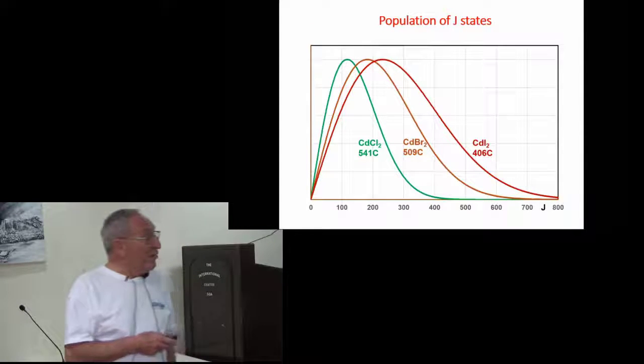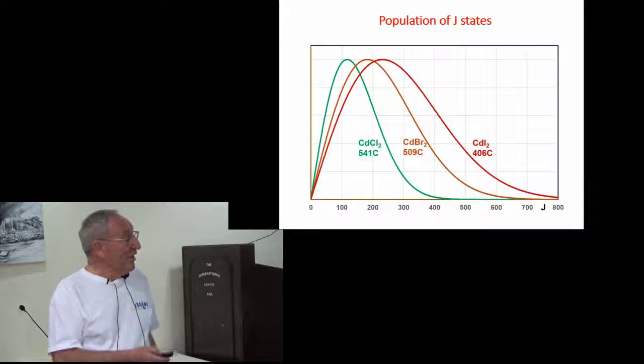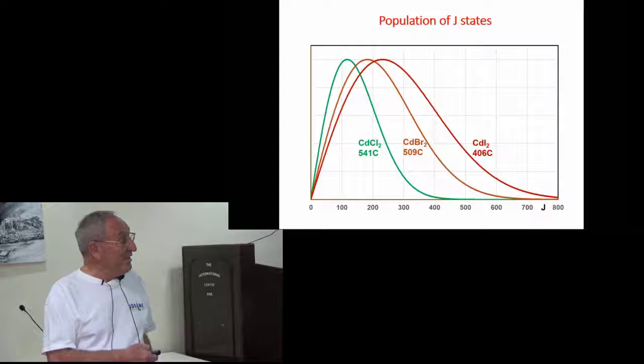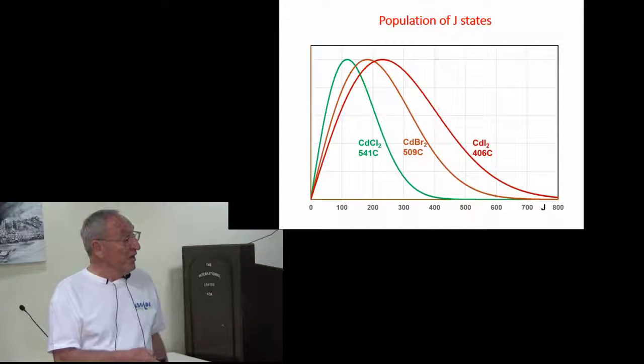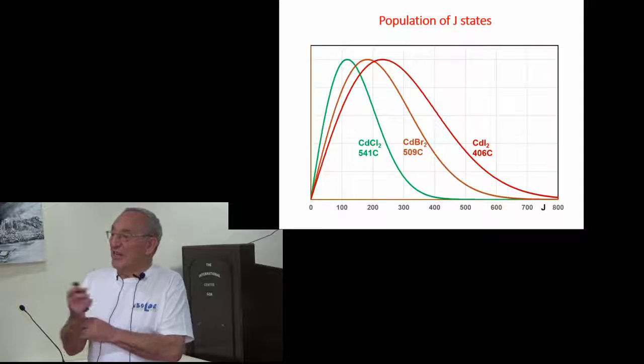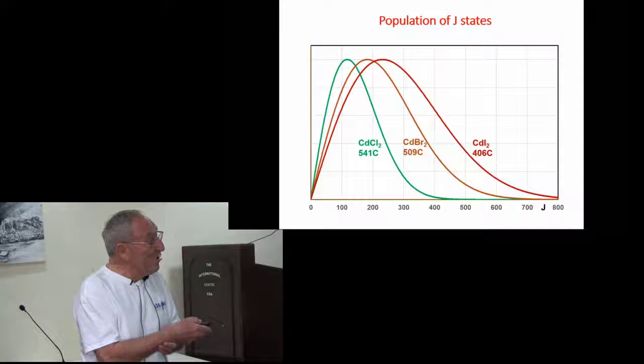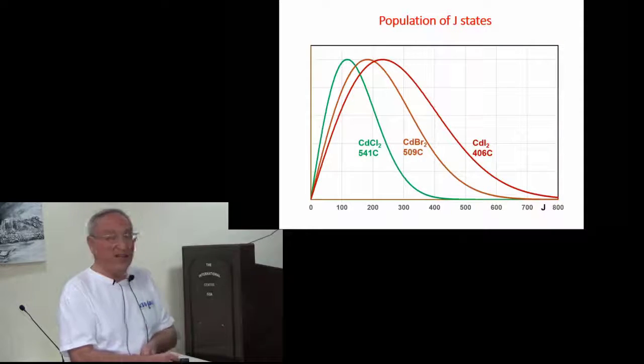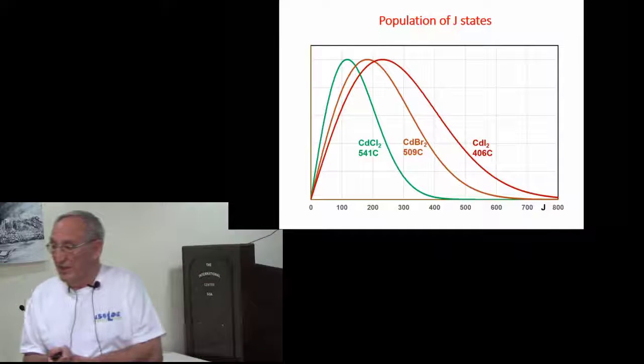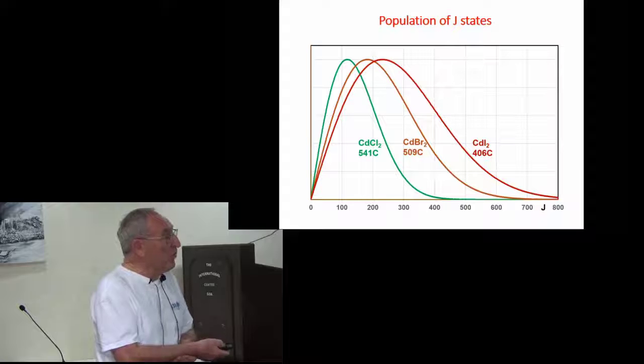As an example I've plotted, the colors don't come at all here I'm sorry, for the three interesting cases - the cadmium chloride, bromide, and iodide molecules - the number of J states, rotational states, that are occupied at the typical measuring temperatures. So there are essentially hundreds of rotational states. That means a classical approximation should be quite good.